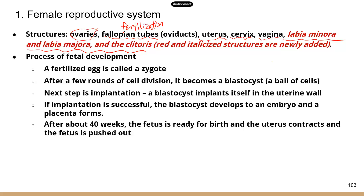On the genitalia, there are structures that are recently updated. That includes labia minora, labia majora, and the clitoris. You may see multiple choice questions that ask which of the following structures are part of the female reproductive system, or select all that apply — so you need to remember to select these structures that are part of the external genitalia.